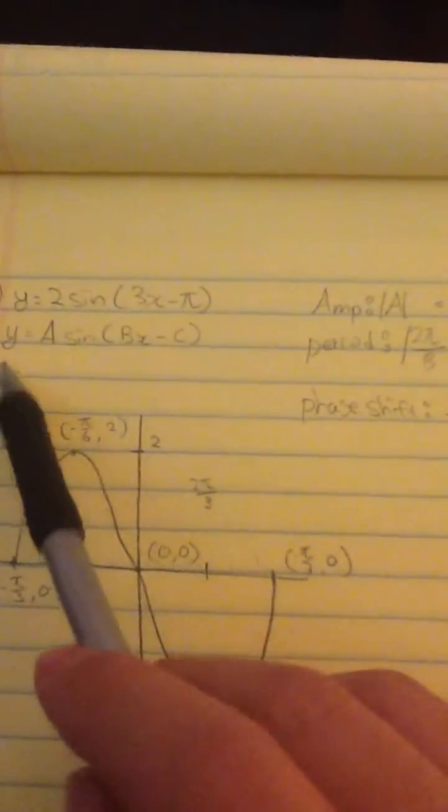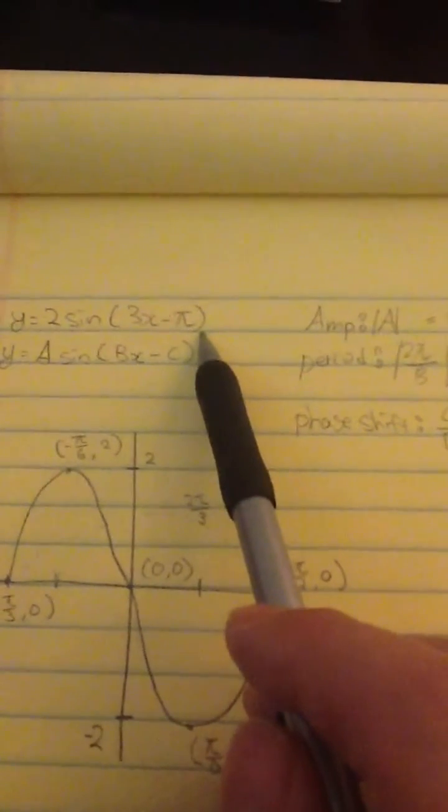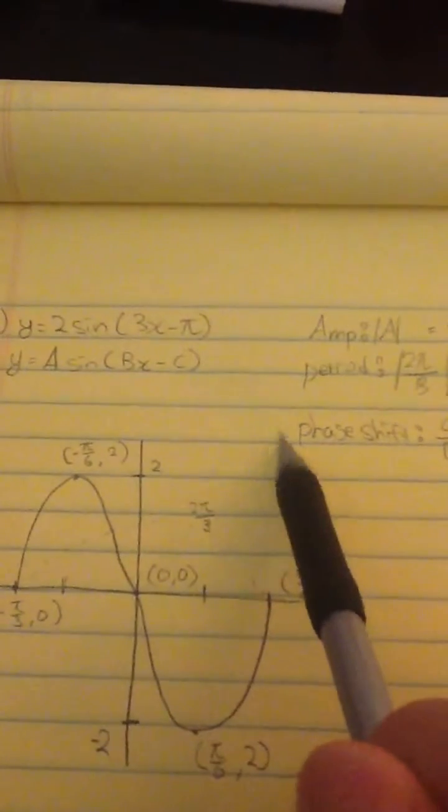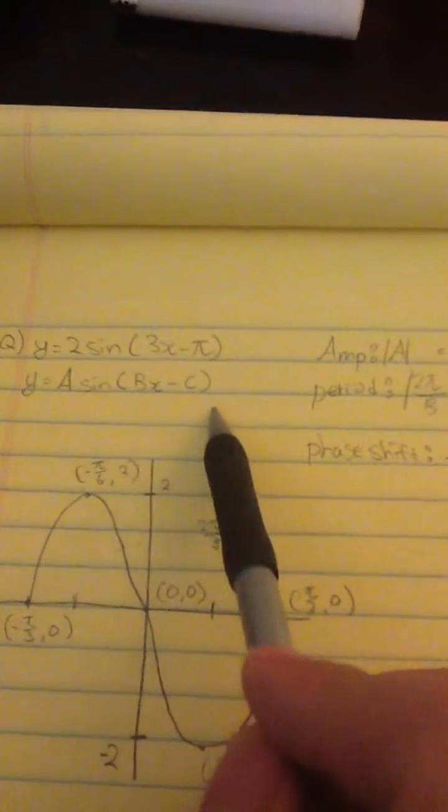So the function is y equals 2 sine 3x minus pi. To find the amplitude, period, and phase shift, we're going to use the function in this form: y equals a sine bx minus c.